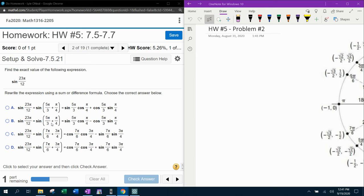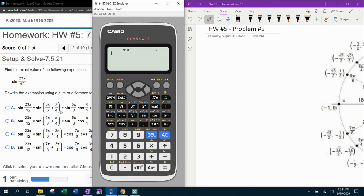So what I'm going to do first is I'm going to check and make sure that both of these pairs of angles do add up to make 23π over 12. If they don't, then that will exclude two of the answer choices.